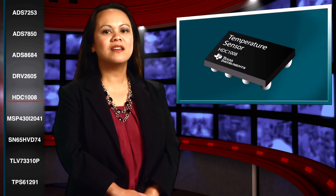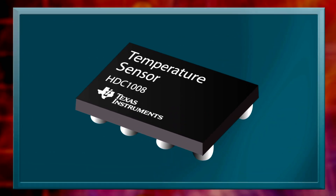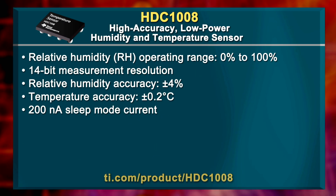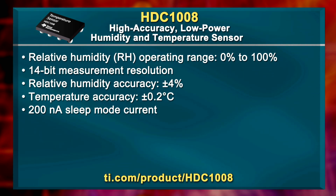Need to maintain temperature and humidity in your next design? That includes TI's HDC1008 high accuracy, low power humidity and temperature sensor. Use it for applications such as HVAC, smart thermostats, white goods, printers, handheld meters and others. It'll keep your customers cool and dry.